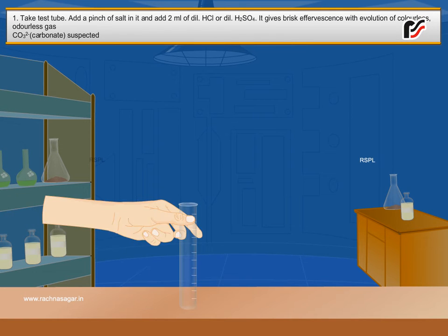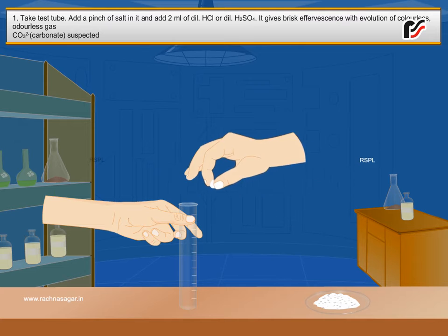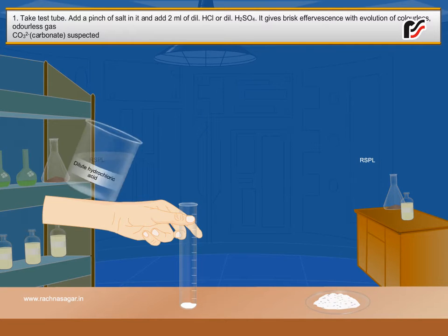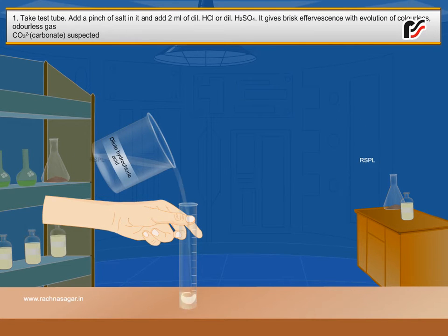Take test tube. Add a pinch of salt in it and add 2 ml of dilute HCl or dilute H2SO4.